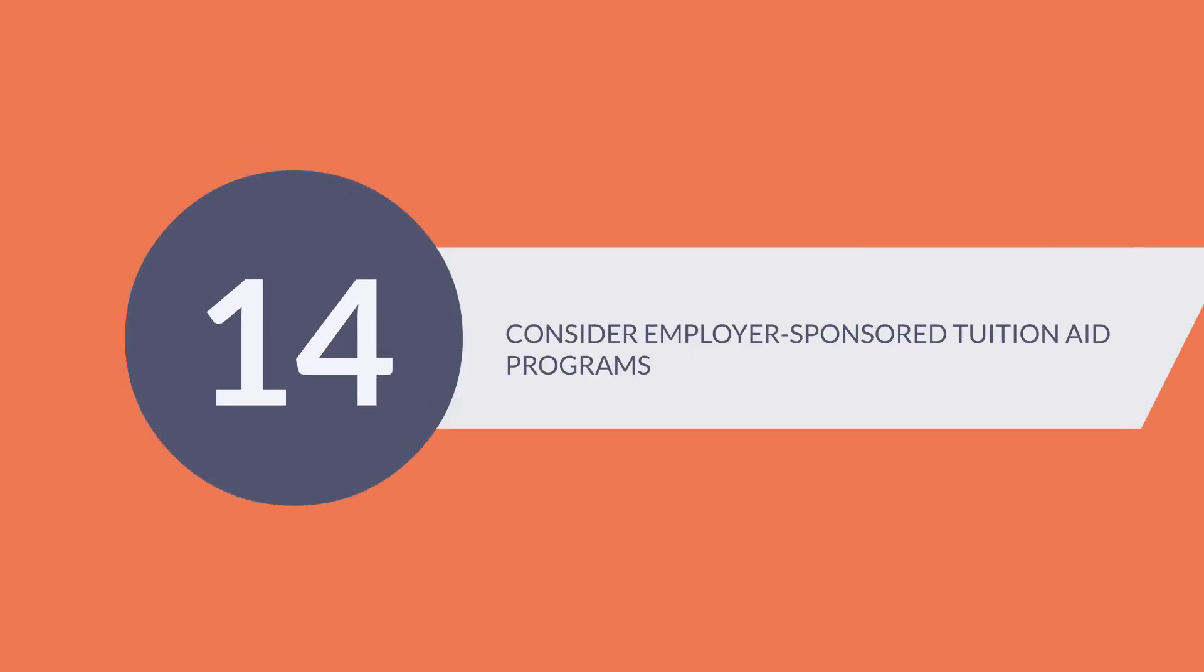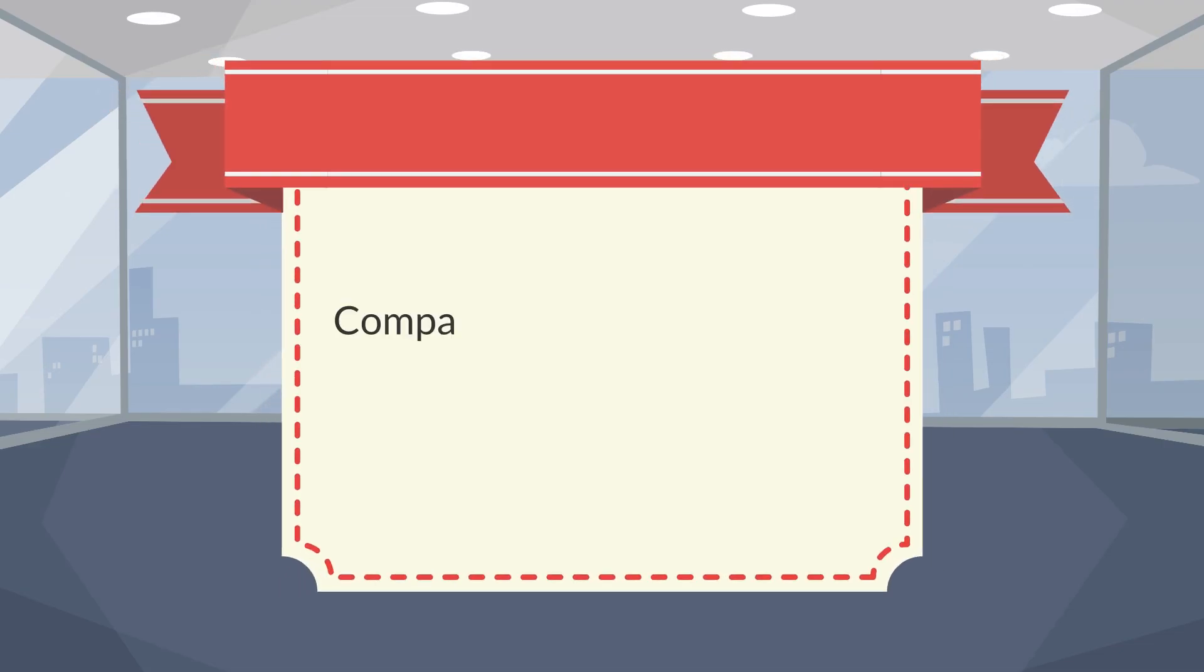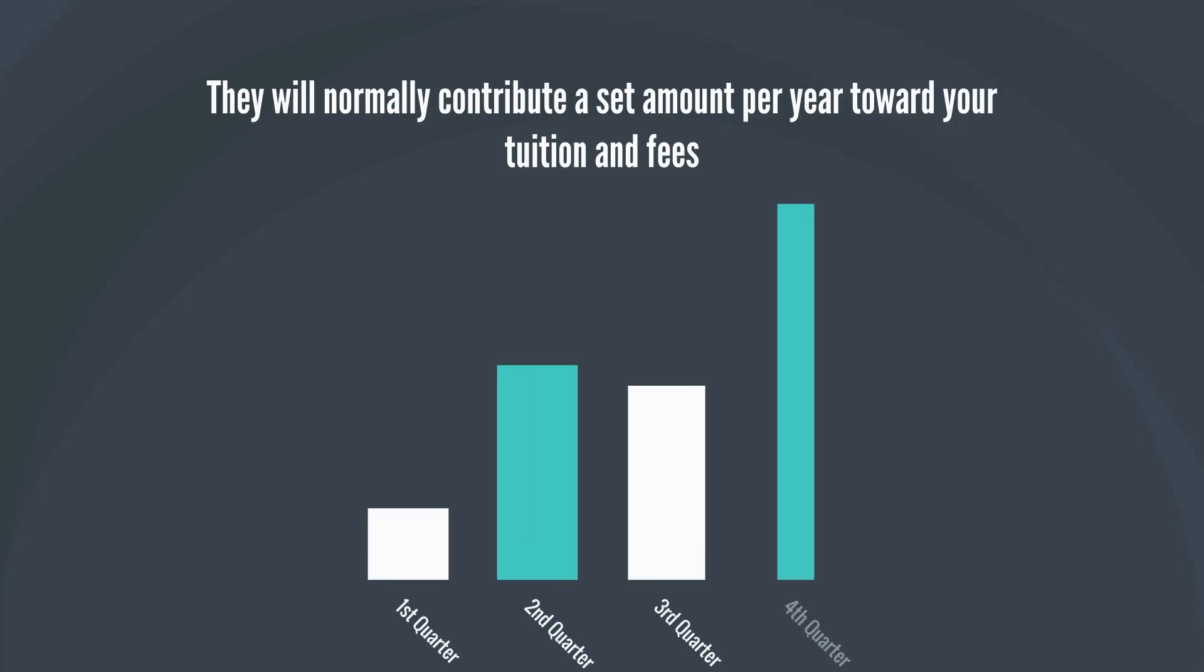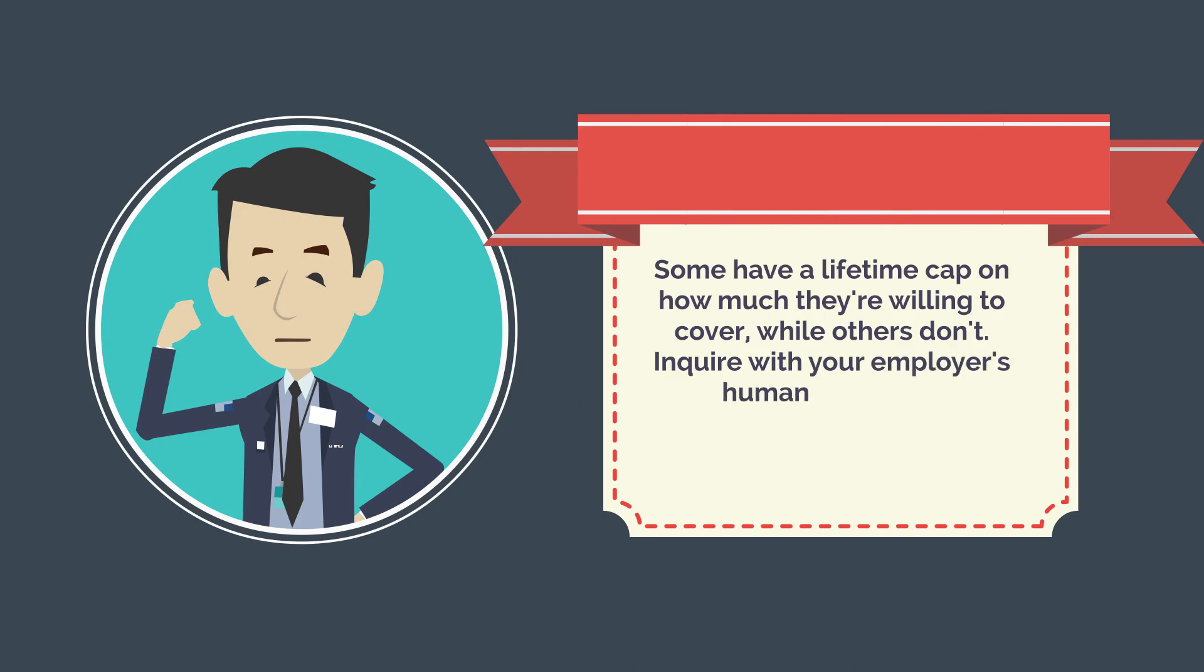14. Consider Employer-Sponsored Tuition Aid Programs. Companies such as Publix, UPS, Starbucks, Walmart, and Chipotle have all begun to offer tuition aid to their employees. They will normally contribute a set amount per year towards your tuition and fees. Some have a lifetime cap on how much they are willing to cover, while others don't. Inquire with your employer's Human Resources Department to see if it has any help programs for college students.